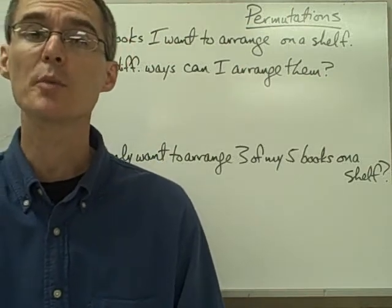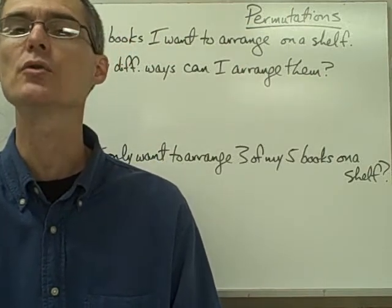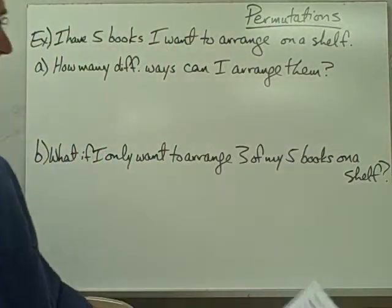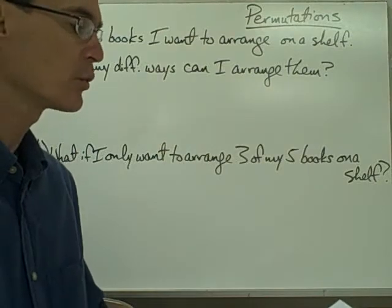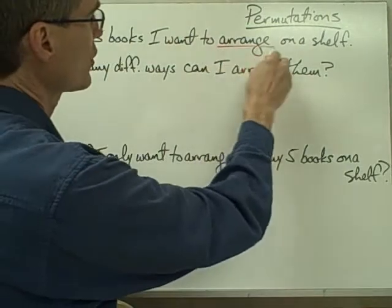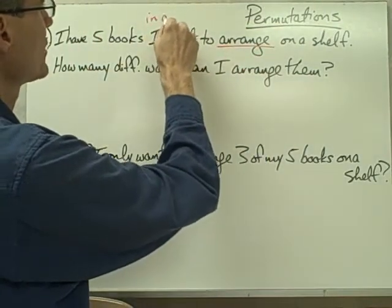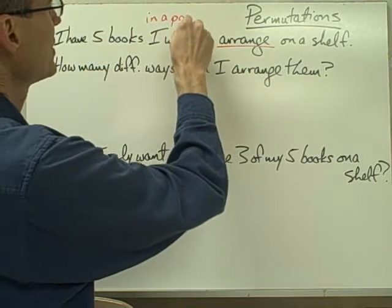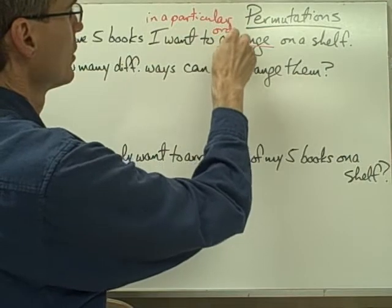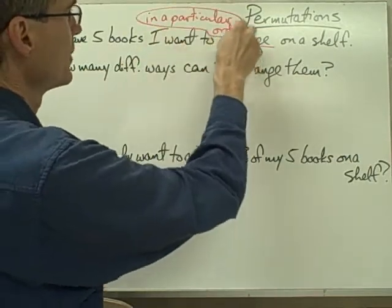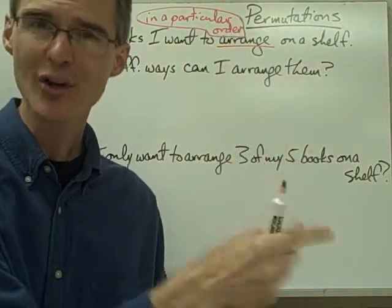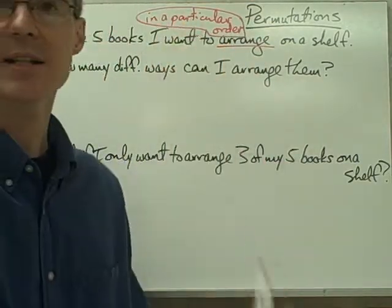In this video we're going to talk about something called permutations, which makes use of the fundamental principle of counting. We have an example that says: I have five books I want to arrange in a particular order on a shelf. This word 'arrange' — when we say arrange and in a particular order — that's important because when it comes to permutations, this whole idea of arranging items in a particular order is significant. We're going to be coming back to that over and over again.